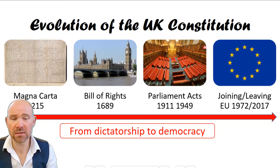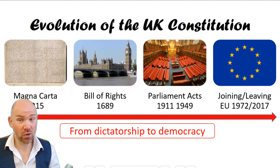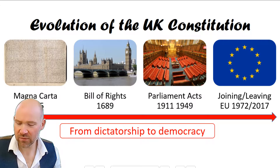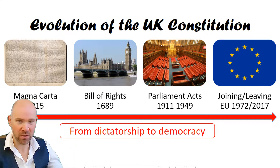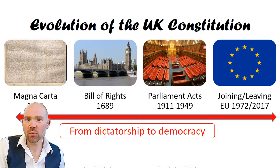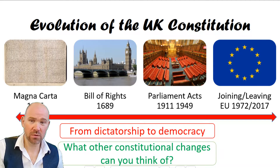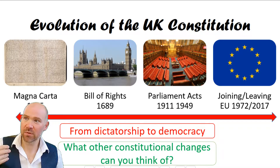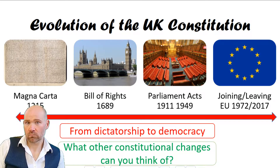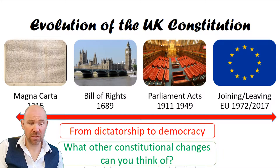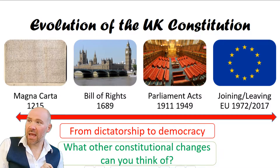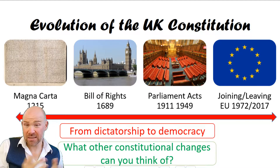Bringing us right up to date: joining and leaving the EU. We joined in 1972 — a constitutional change because we lent sovereignty to Brussels, called pooled sovereignty — and then in theory we took it back, though that hasn't actually happened yet. These are all constitutional changes because they change how the country is run. Other constitutional changes you might think of include changes to voting rights, devolution, the creation of the Scottish Parliament, the Fixed-term Parliaments Act — anything that changes how the country is run is technically a constitutional change.